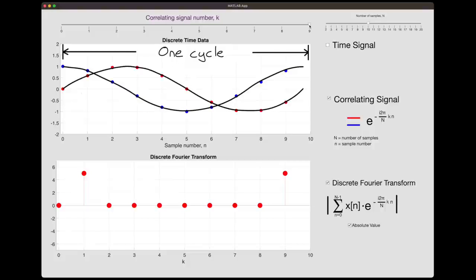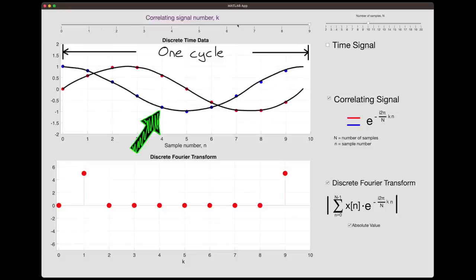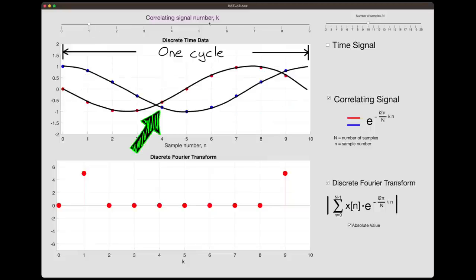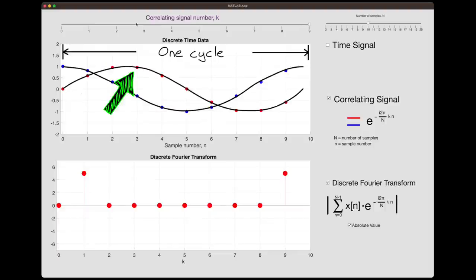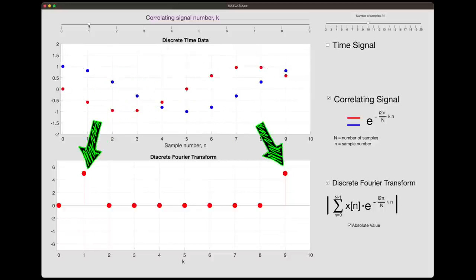And we can see that a little bit easier here. Notice that between k equals nine, which is the lowest negative frequency, and k equals one, which is the lowest positive frequency, the correlating signal is the exact same frequency. It's just negative. Now you'll notice that the real component isn't changing sign here, and that's because cosine is an even function. So the cosine of a positive number is the same as the cosine of a negative number. But the imaginary component does change sign, since sine is an odd function. This means that between k equals one and k equals nine, the magnitude of the FFT stays the same. And the same is true for k equals two and eight, and three and seven, and so on until we reach the Nyquist frequency.